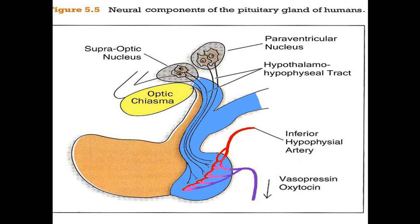The paraventricular nucleus and the supra-optic nucleus secrete ADH or vasopressin, which is transferred through the hypothalamo-hypophysial tract down into the posterior pituitary, where it is stored along with oxytocin and from where it will be released.